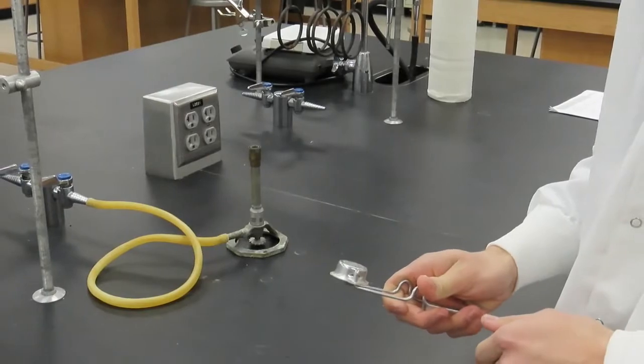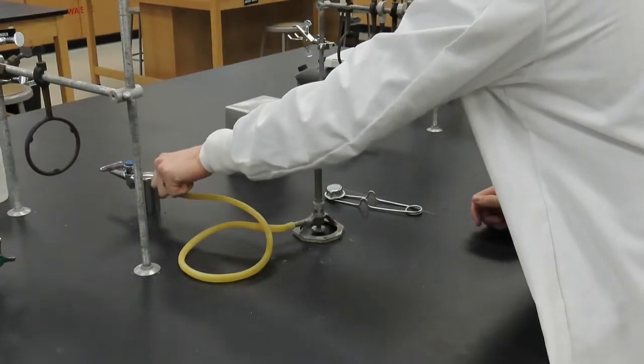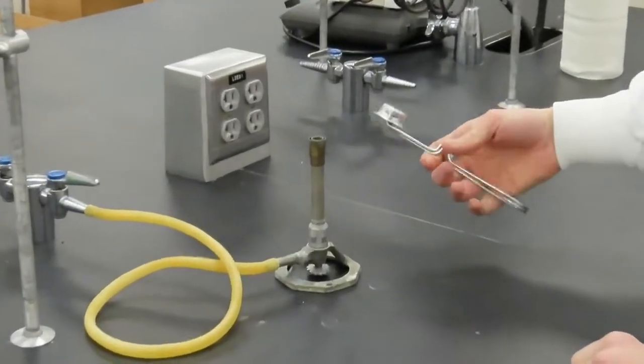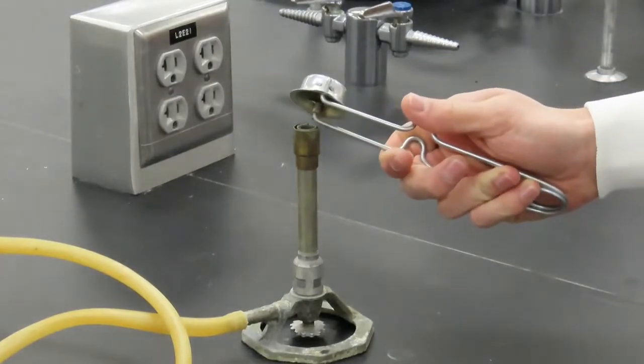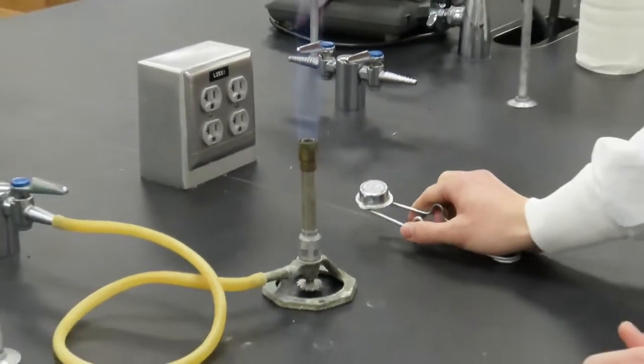Now open the gas valve on the lab bench by turning it so that the valve is parallel with the hose. At this point, you should be able to hear and even smell the gas coming out of the burner. Place a striker at the top of the burner, but to one side and use it to produce sparks. After two or three attempts, the burner should successfully light.